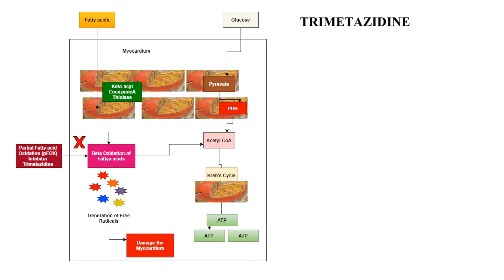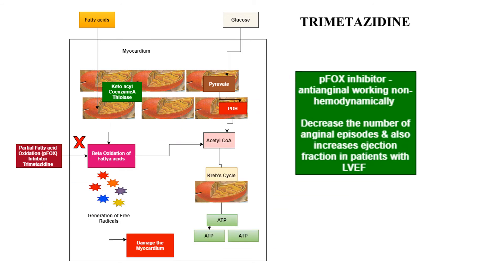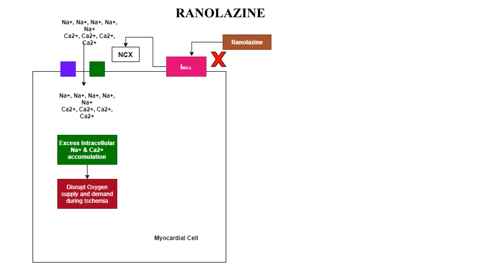Trimetazidine is a partial fatty acid oxidation inhibitor. In angina, myocardial muscle may use glucose synthesized through fatty oxidation instead of the regular ATP synthesis via the Krebs cycle. During beta oxidation of fatty acids, more free radicals are generated. Trimetazidine inhibits partial fatty acid oxidation through non-hemodynamic mechanisms. It decreases the number of anginal episodes and also increases ejection fraction in patients with left ventricular failure.